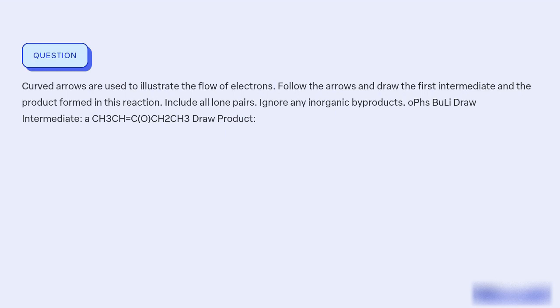What is the first intermediate and product formed in the reaction of OPHs, including all lone pairs and ignoring any inorganic byproducts, by following the curved arrows that illustrate the flow of electrons?